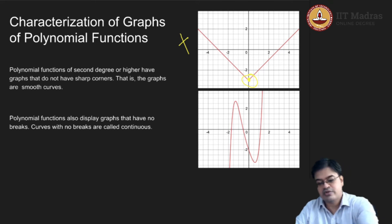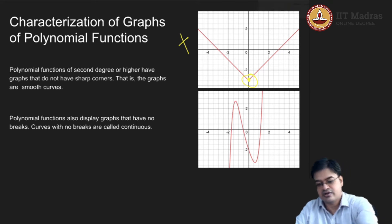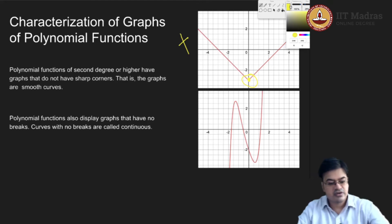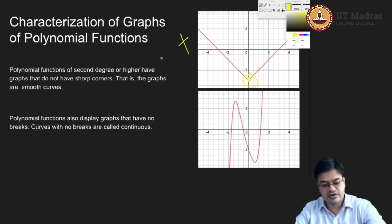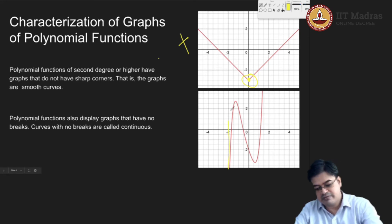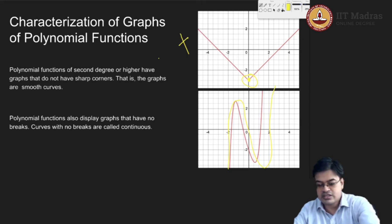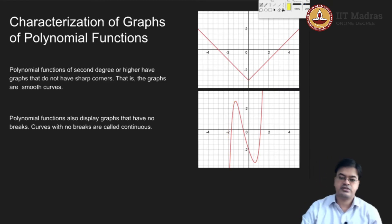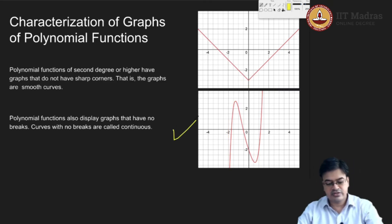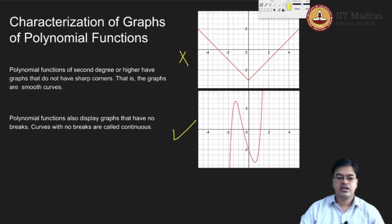Now let us look at the next graph. Here I can use my freehand skill to draw a curve, and I can actually find that if I start drawing this curve, I can easily pass through all the points. All the transitions are very smooth. Because the transition is very smooth, I can easily identify this to be a polynomial function. Therefore, this qualifies to be a polynomial function, whereas the previous one does not.